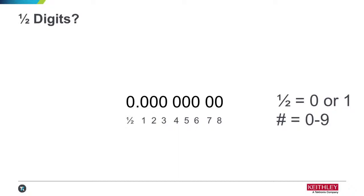Sometimes you do see instruments where that half digit can be a one, two, or even up to three. You'll sometimes see people call those instruments six and three-fourths digits, but the industry standard is to call anything that's not a full-scale digit a half digit.